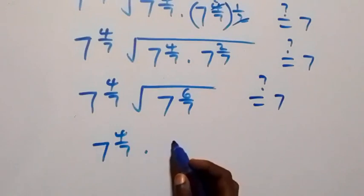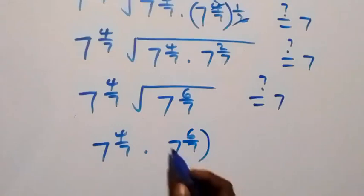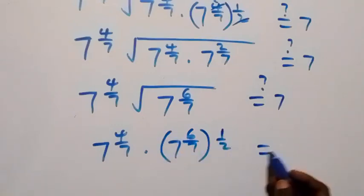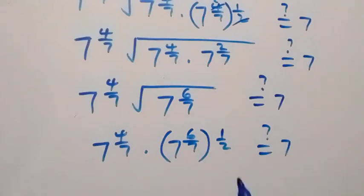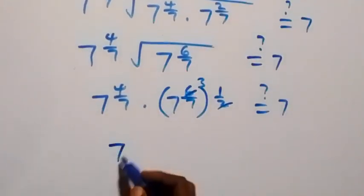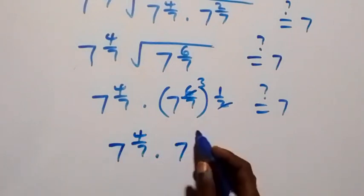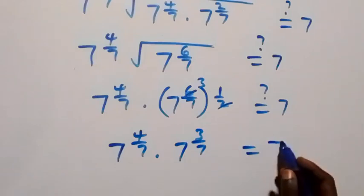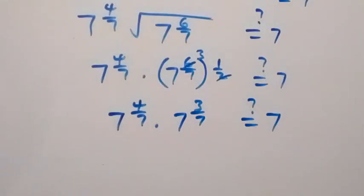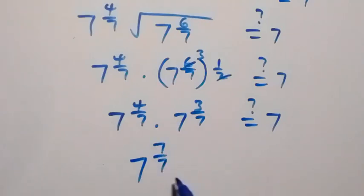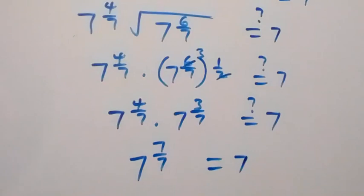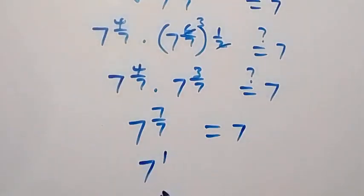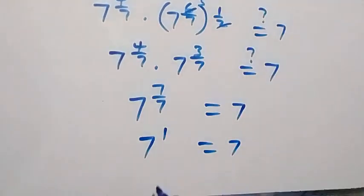Then we can write that seven raised to power four over seven, times seven raised to power six over seven, raised to power half, equals to seven. This power also multiplies: six over seven times one half gives three over seven. So we have seven raised to power four over seven, times seven raised to power three over seven, equals to seven. Summing the powers: seven raised to power seven over seven, which equals seven raised to power one, which equals seven. So left hand side equals right hand side.